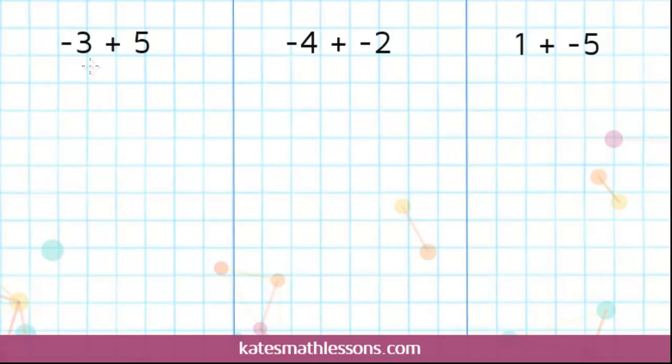Let's start with this first one. We have negative 3 plus 5. You can think of this as negative 3 plus a positive 5.